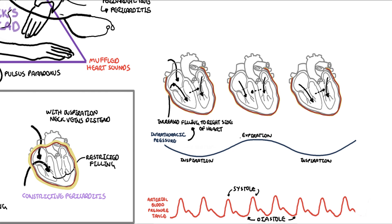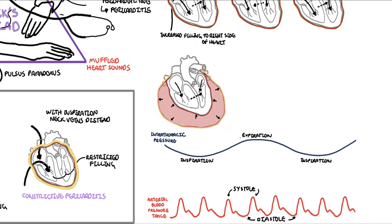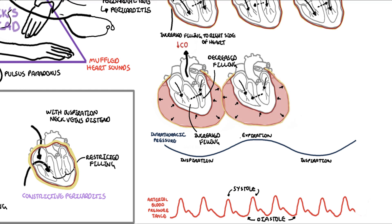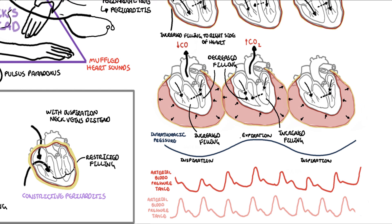You can experiment with this physiological mechanism by feeling your own pulse — if you take a deep breath in, you might notice it becomes softer compared to expiration. In cardiac tamponade there is restriction in ventricular filling. With inspiration there is a significant interventricular septal bulge to the left, decreasing left ventricular filling volume and causing a reduction in cardiac output and systolic blood pressure. During expiration the septum bulges to the right, increasing cardiac output. On an arterial blood pressure trace, cardiac tamponade shows a wandering baseline, and pulsus paradoxus is when the inspiratory drop in systolic blood pressure exceeds 10 mmHg.